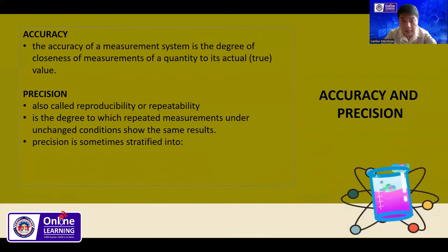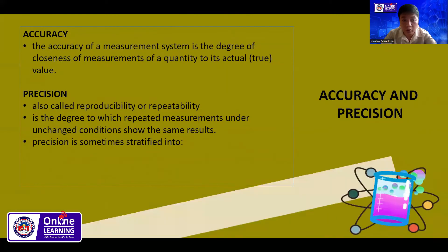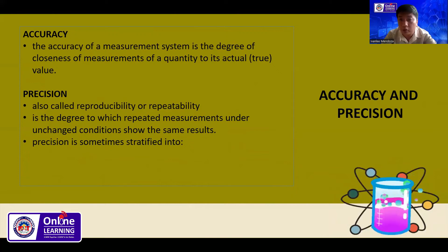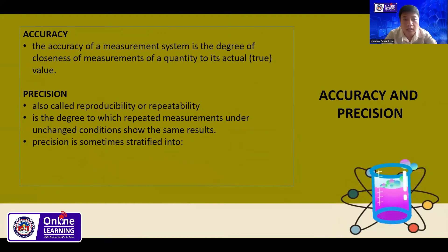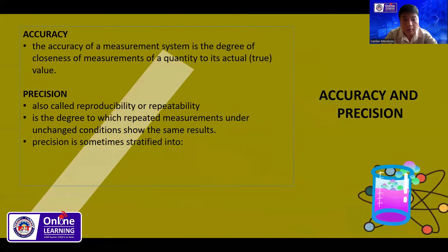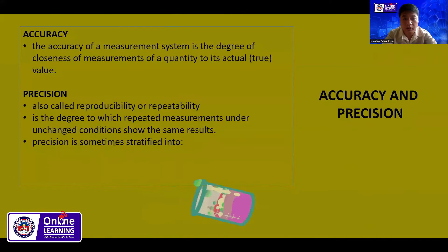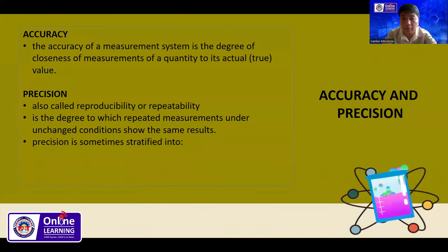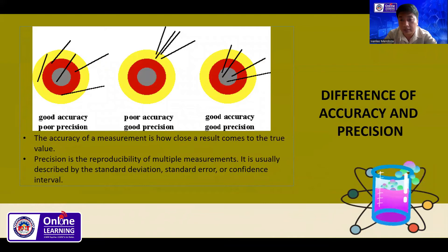So when we say precision, repeated measurements are very close to each other — for example: 0.11, 0.12, 0.13, 0.11, 0.10. Those are repeated measurements very close to each other. Precision is sometimes stratified into two components: reproducibility and repeatability.